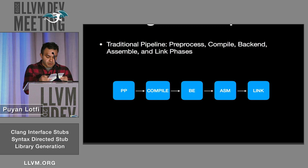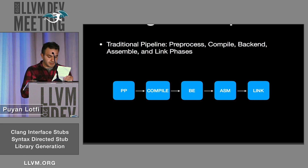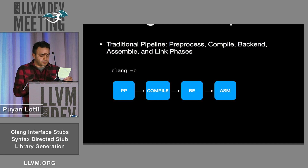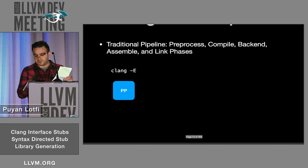Traditionally, the Clang driver generates a pipeline of phase jobs that the Clang toolchain specifies. Regardless of the toolchain implementation, these phases follow the skeleton sequence of pre-processing, compilation, back-end code generation, assembly, and finally linking. There are many flags that can be used to trim the full length of this pipeline, but this structure is essentially what the Clang driver follows.